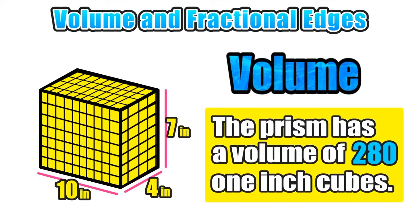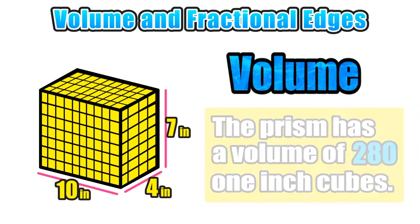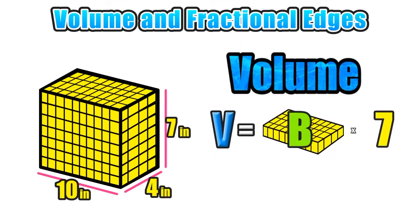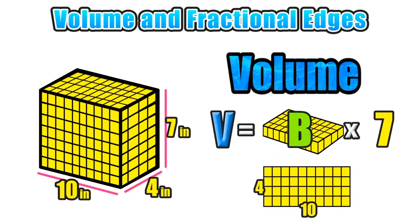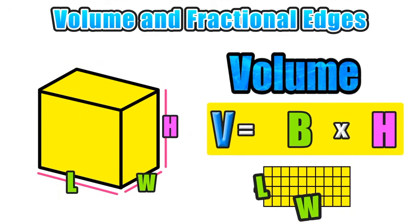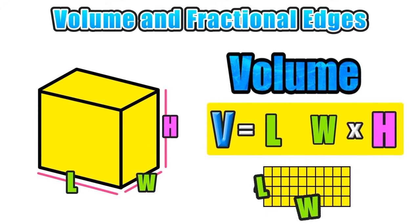Let's go back and think about the general rules that apply to finding the volume of a rectangular prism. We found volume by first figuring out the number of cubes in the base layer — which is the area of the base, or length times width — and then multiplying that value by the height. So we can define the volume of a rectangular prism as the area of the base times the height. This connects directly to the more familiar formula: volume equals length times width times height, where B represents length times width.